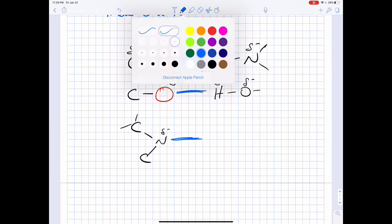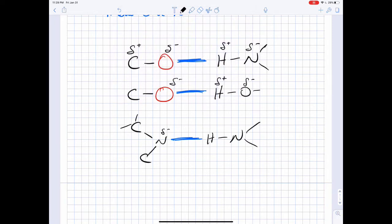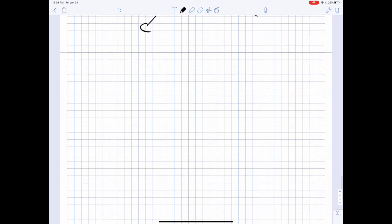Those are other different examples. We have a C double bond to water that makes a hydrogen bond with the hydrogen bonded to an oxygen.